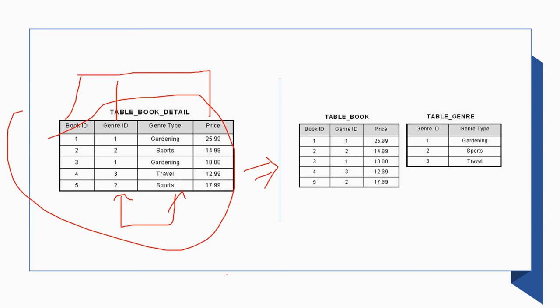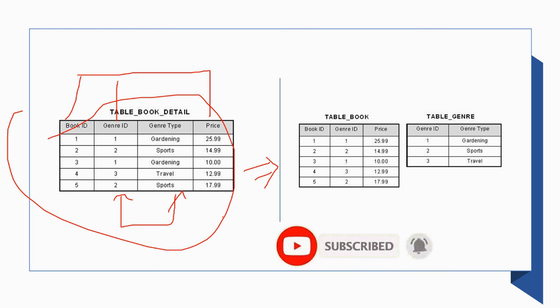These are the three normal forms, which are very important. You should make sure your tables are properly normalized. In the next video we will discuss how to establish relationships between tables to create a complete relational database. Thank you for watching — stay safe, bye.